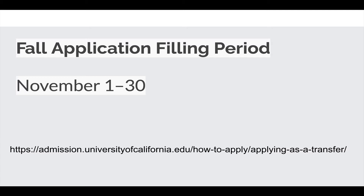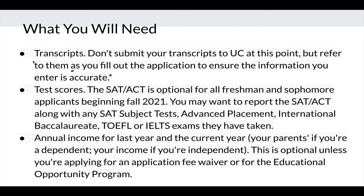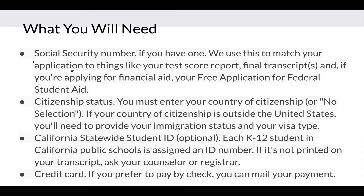The application filing period for fall is between November 1st and the 30th. Before we continue, here's a list of things you will need: copies of your transcripts from Santa Barbara City College and every other college and university you've ever attended, copies of your test scores including AP and IB exams, the annual income for the last year and the current year — if you're a dependent you'll need your parents' income, and if you're independent you'll need your own income. You'll also need your Social Security number, your citizenship status, your California Statewide ID number if you know it, and a credit card if you plan to pay.